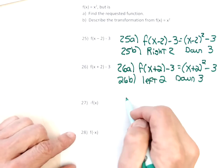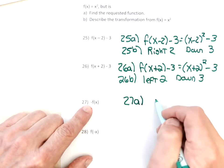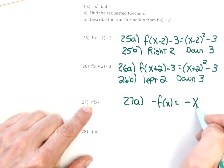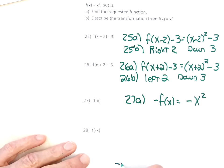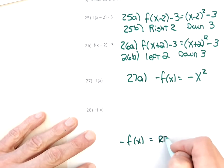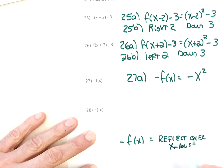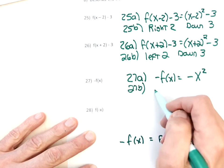For problem 27, part A, to find each function: if the negative is not inside the parenthesis, it just goes in front of the function, so this is just going to be negative x squared. Negatives in front reflect over the x-axis, or turn it upside down. For part B, we say it flips over or reflects over the x-axis.